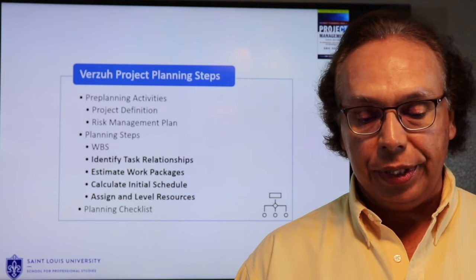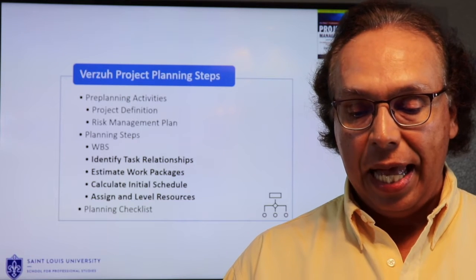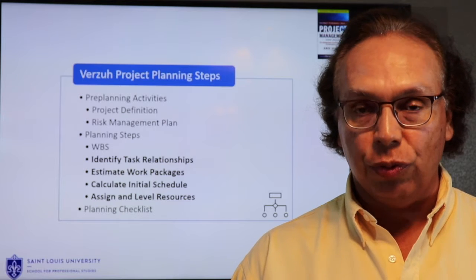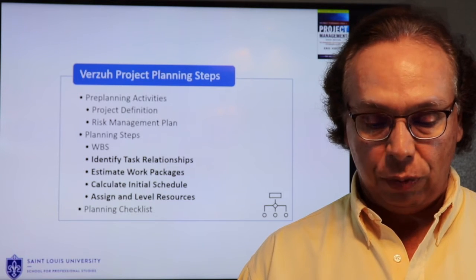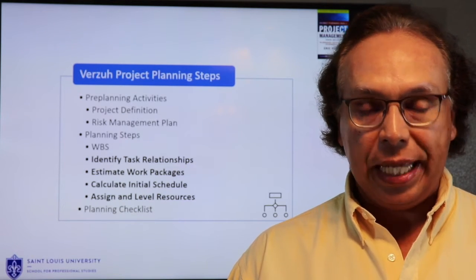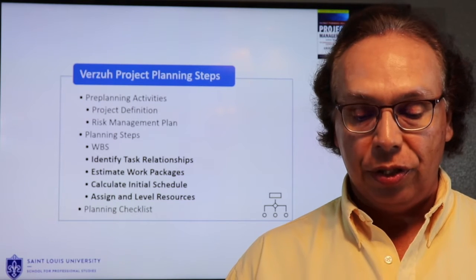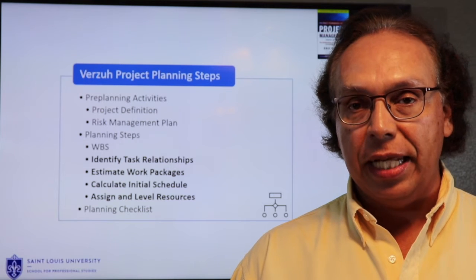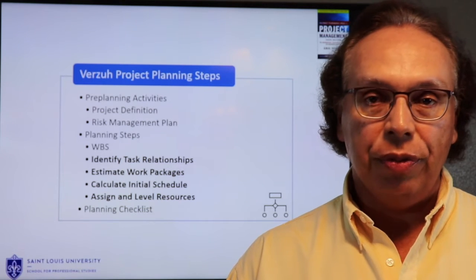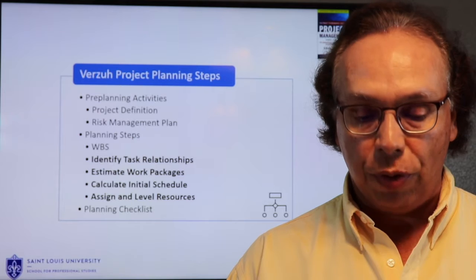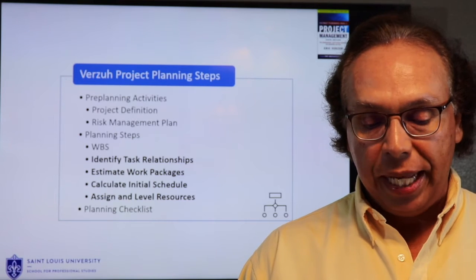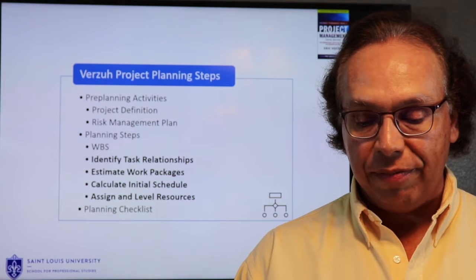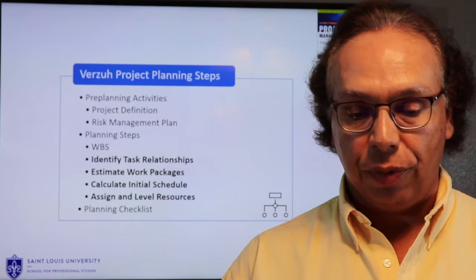Step number two is the identification of tasks, activities, and relationships. Step three is estimating the work packages, which we'll do a deeper dive into next week. Step four is calculating or building the initial schedule using the tool of your choice. Step five is assigning and leveling resources so that nobody works over 40 hours. Please see the planning checklist available in the files section of Canvas in Templates and Forms.